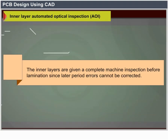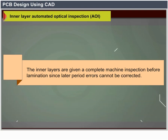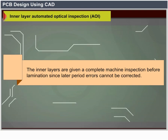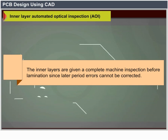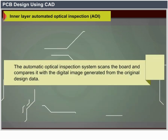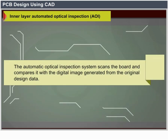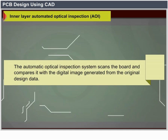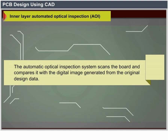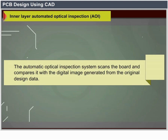Inner Layer Automated Optical Inspection (AOI): the inner layers are given a complete machine inspection before lamination because afterwards mistakes cannot be corrected. The automatic optical inspection system scans the board and compares it with the digital image generated from the original design data.